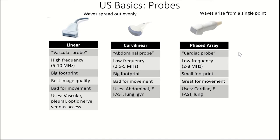Now the probes — choosing your probe. There are three major probe choices: the linear probe, the curvilinear probe, and the phased array. For the phased array, waves arise from a single point, whereas the linear and curvilinear spread out evenly. The linear probe is called the vascular probe — it's great for more superficial structures owing to its high frequency. I like to think of a linear blood vessel to remember its association with vascular use. The curvilinear is the abdominal probe, good for deep structures. I use 'curvy away into the abdomen' to remember this is the abdominal probe, owing to its low frequency.